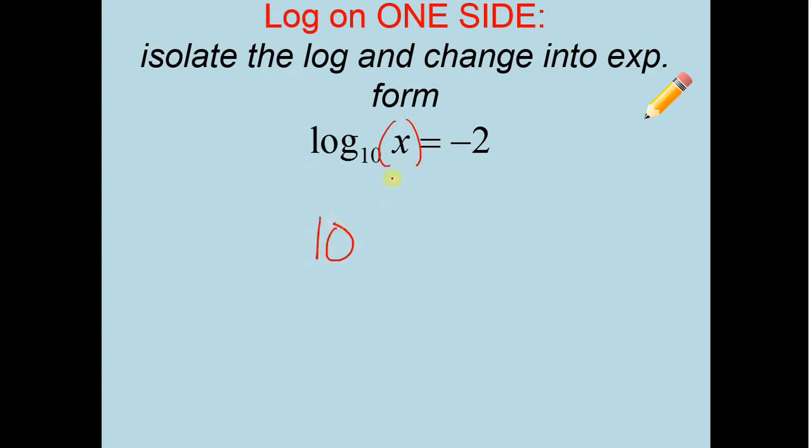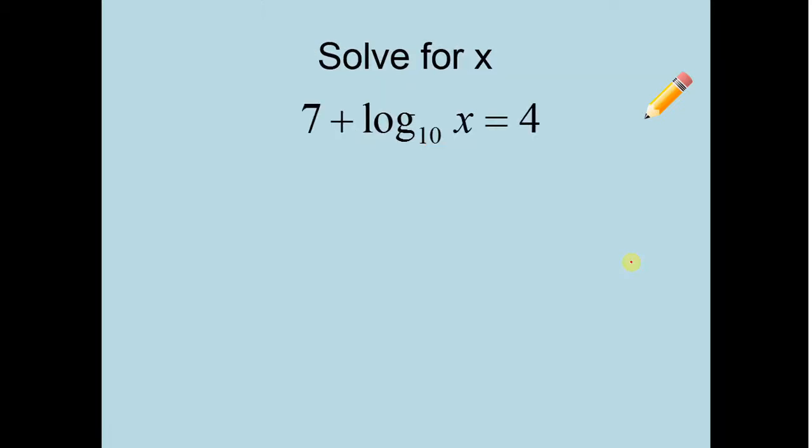So it'd be 10 to the negative 2 equals x. 10 to the negative 2 is equal to 0.01. And it does check out. If you check that on a calculator, it will check out. Let's try this one. 7 plus log base 10 of x equals 4. So the very first thing I need to think of how to do is I need to get rid of this 7. I need to get log completely alone. So I'm going to subtract 7 from both sides.